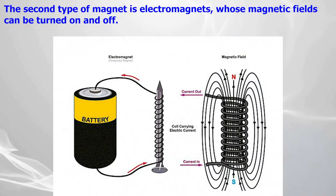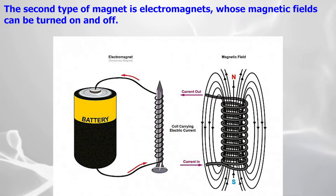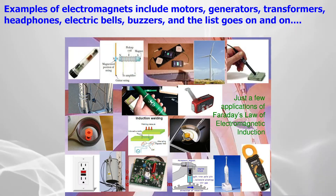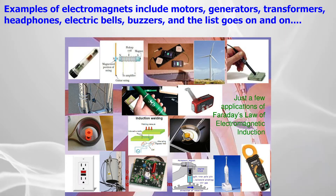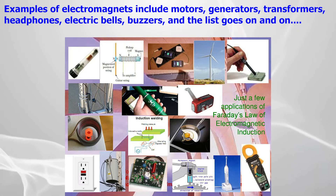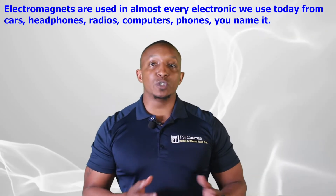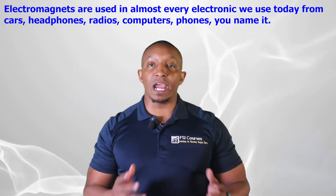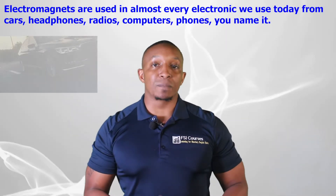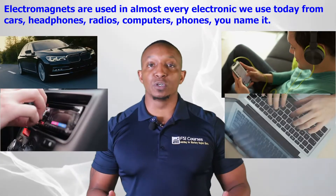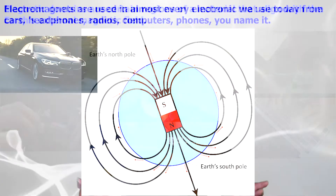The second type of magnet is electromagnets, whose magnetic fields can be turned on and off. Examples of electromagnets include motors, generators, transformers, headphones, electric bells, buzzers, and the list goes on and on. Electromagnets are used in almost every electronic we use today — from cars, headphones, radios, computers, phones, you name it.